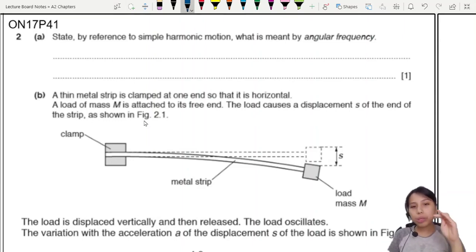Here's a question about simple harmonic motion in a very interesting setup of a metal strip. First things first, they want us to state, by reference to the principle of simple harmonic motion, what is angular frequency?